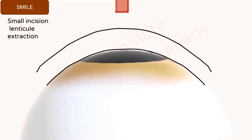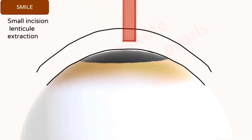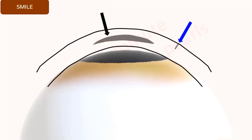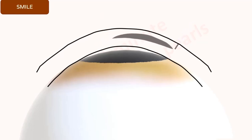In SMILE, or small incision lenticule extraction, a refractive lenticule is shaped by means of the femtosecond laser, which also makes a side cut in the periphery of the cornea. The refractive lenticule, represented by the black arrow, is removed through the incision represented by the blue arrow. SMILE is now being performed for myopia up to about 10 diopters and myopic astigmatism. Its efficacy in hyperopia is being studied.